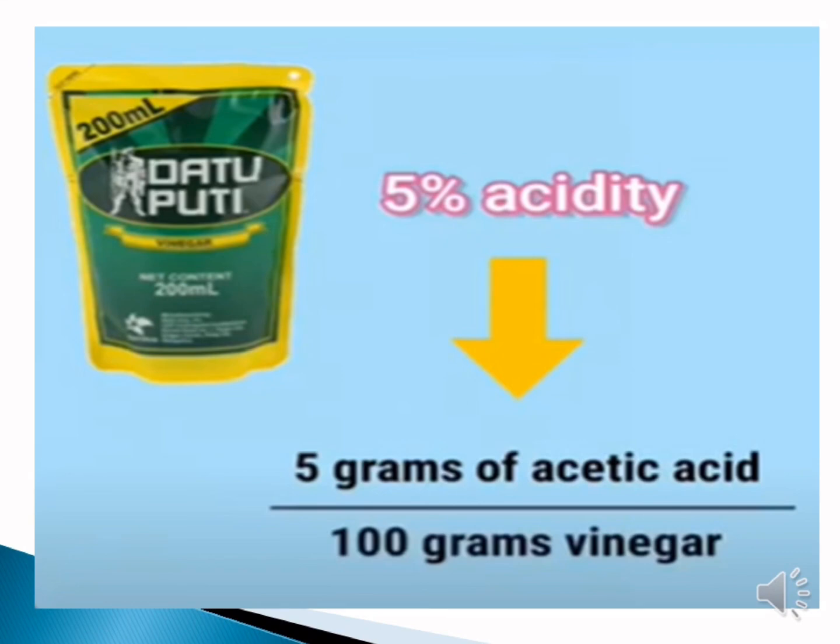Labels of products we use at home show the concentration of solution expressed as percent by mass or volume. For example, vinegar is labeled 5% acidity, which means that it contains 5 grams of acetic acid and 95 grams of water to make 100 grams of vinegar.